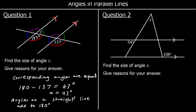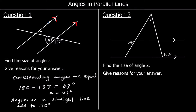We could have answered it differently. We could have said angles on a straight line add up to 180 degrees, so this one here is 43 degrees. And then we could have used alternate angles — alternate angles are a Z shape. These two angles here are alternate angles, and alternate angles are always equal.